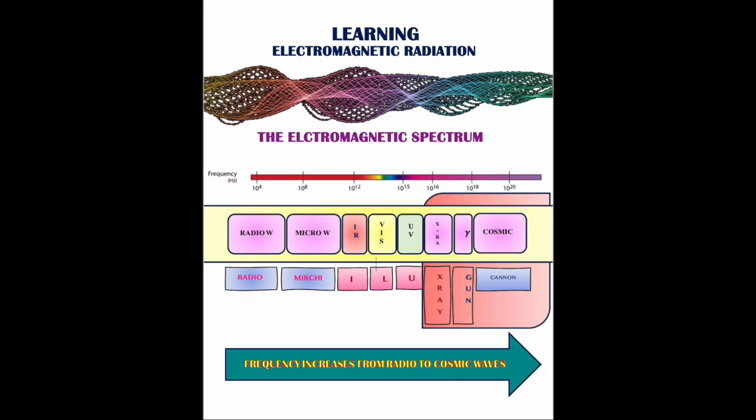Love your X-ray gun cannon. Radio Mitchi means radio waves and microwaves. I love your means infrared, light (the visible light you can see), and ultraviolet. X-ray gun cannon represents X-rays, gamma rays, and cosmic rays. This sequence makes things easier.